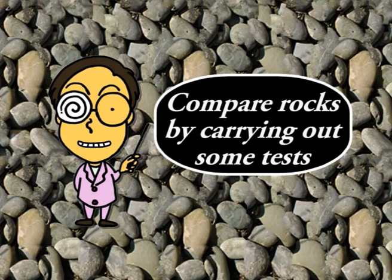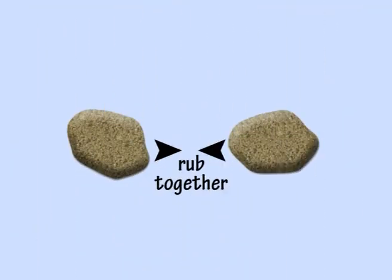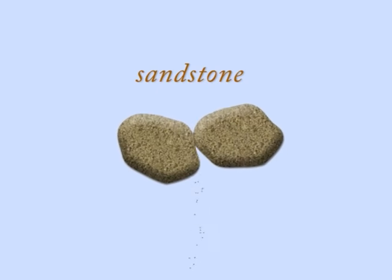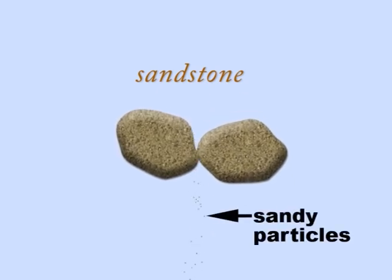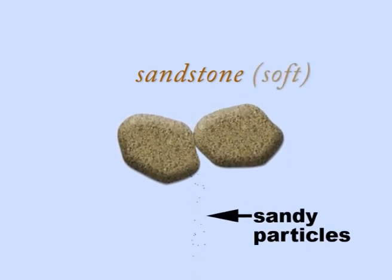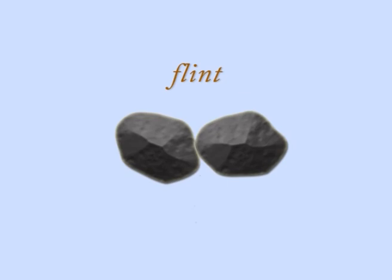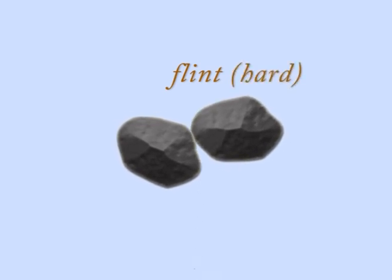You can compare the characteristics of rocks by carrying out some tests. Let's do a rubbing test to see how easily different rocks are worn down. If you rub two pieces of sandstone together, sandy particles come away quite easily, because sandstone is very soft. However, two lumps of flint do not produce nearly as many particles, because flint is much harder.